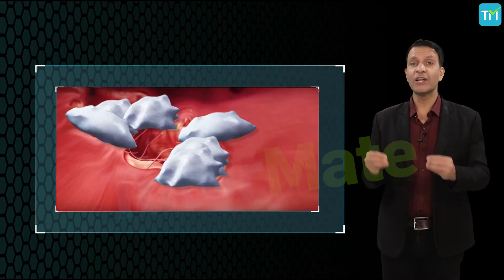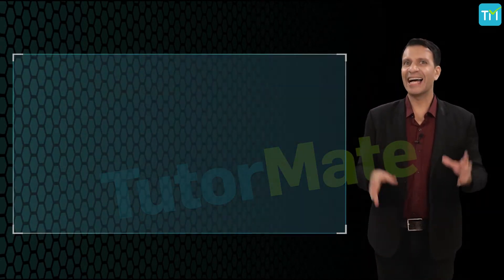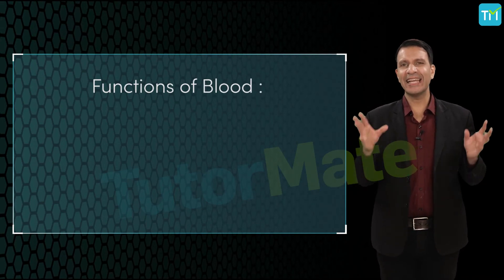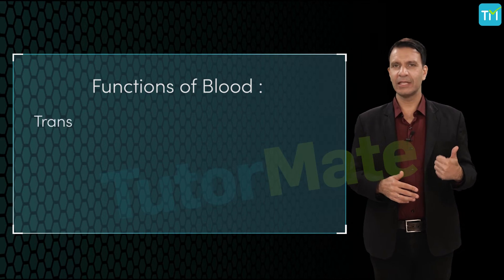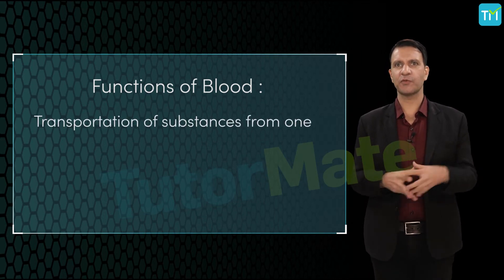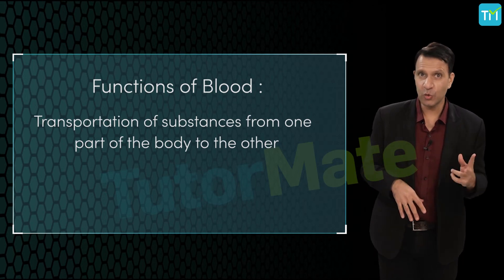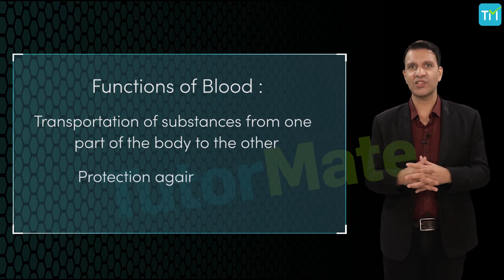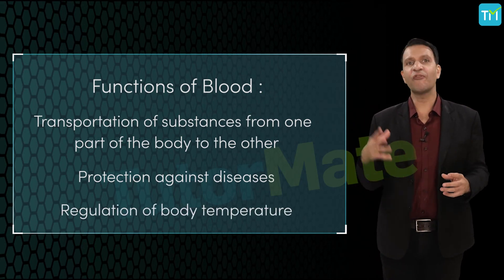So the blood has three main functions in the human body. These are: number one, transportation of substances from one part of the body to the other part of the body; number two, protection against diseases; and number three, regulation of body temperature.